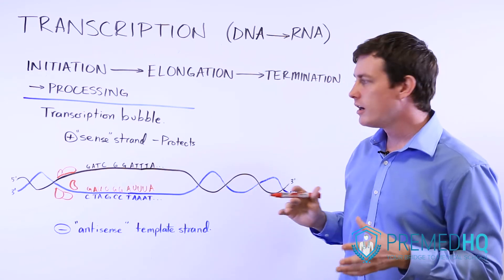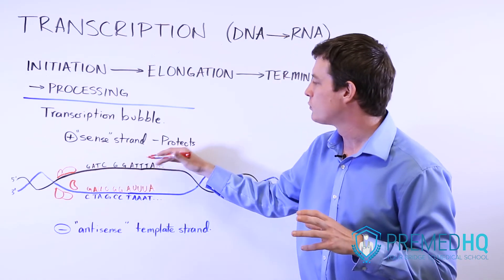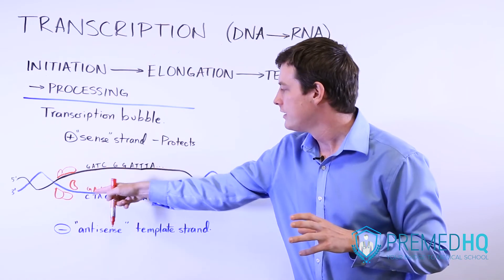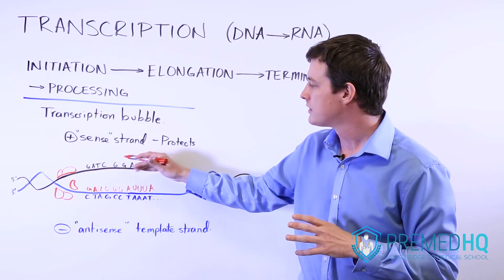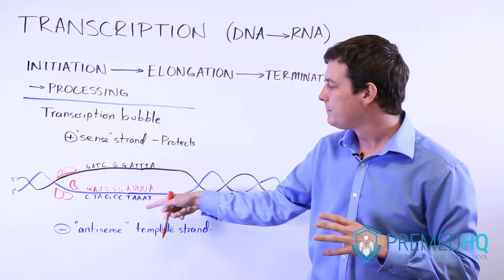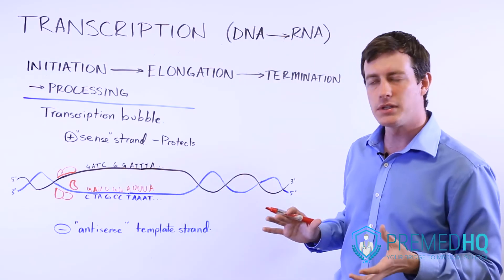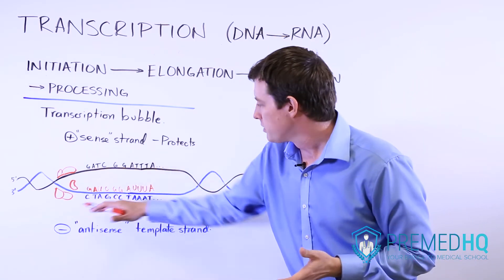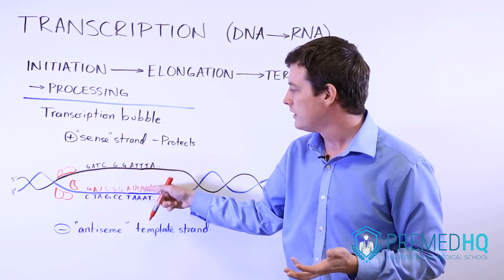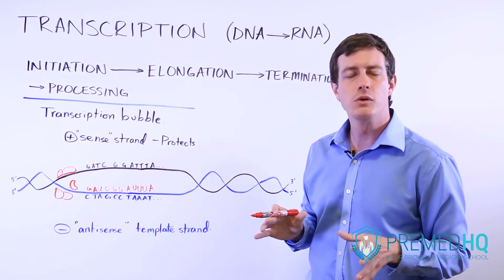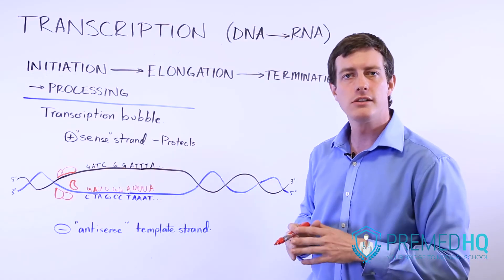You should be aware of the plus or sense strand that is serving a protector function as well as looking a lot like the primary transcript that is formed because their base sequences are both complementary to our template. And then just be aware of this negative or antisense strand that is the template that is complementary and thus gives the RNA polymerase instructions for what bases to lay down, what ribonucleotides to lay down as it produces this pre-mRNA transcript there.